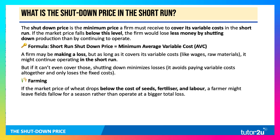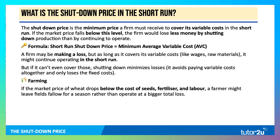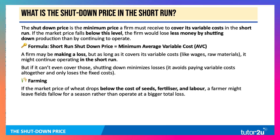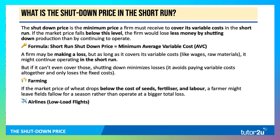For example, in farming, if the market price of wheat collapses and drops below the basic cost of seeds, fertiliser, and labour, then the farmer might decide to leave fields fallow for a season rather than planting and operating at a bigger loss.